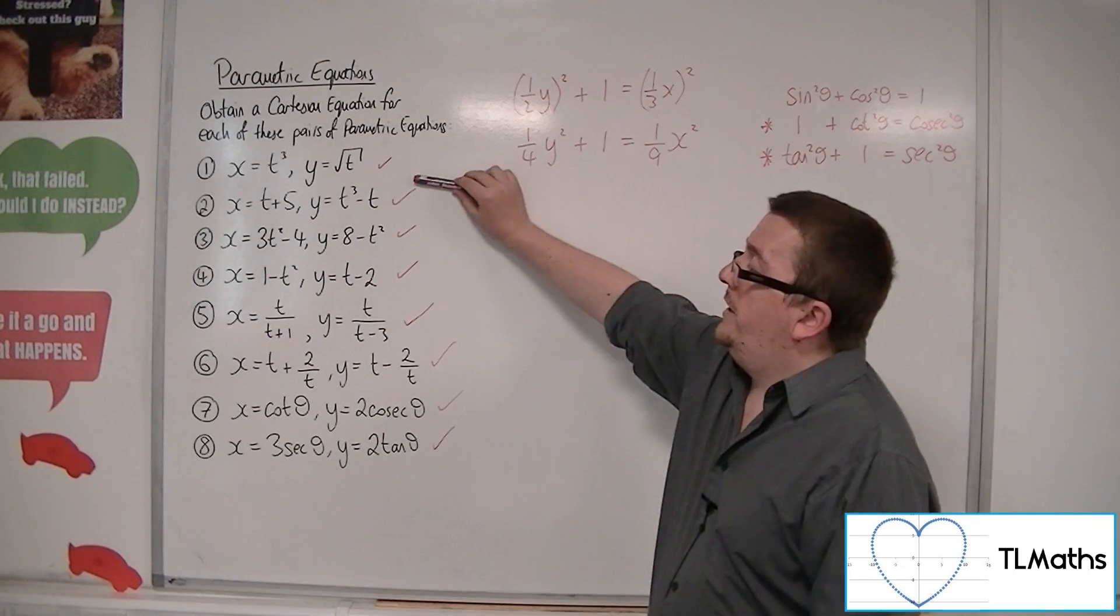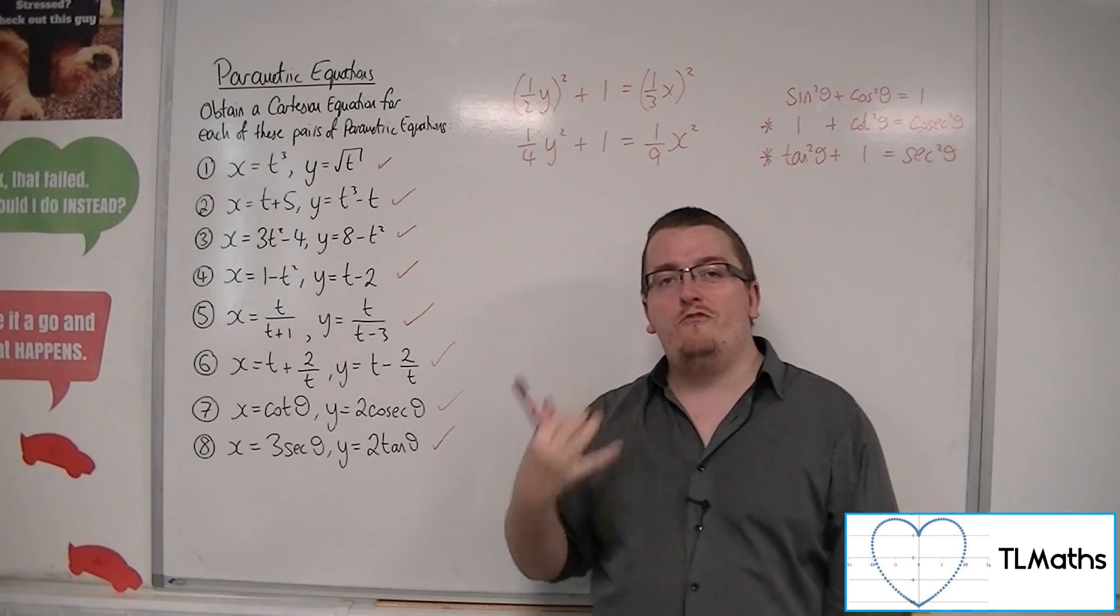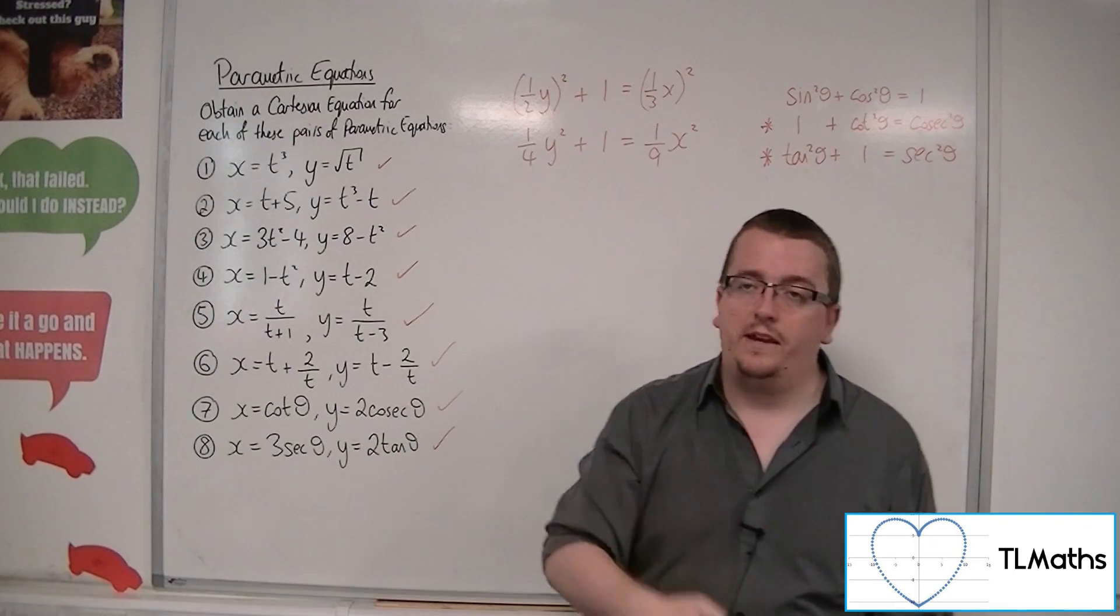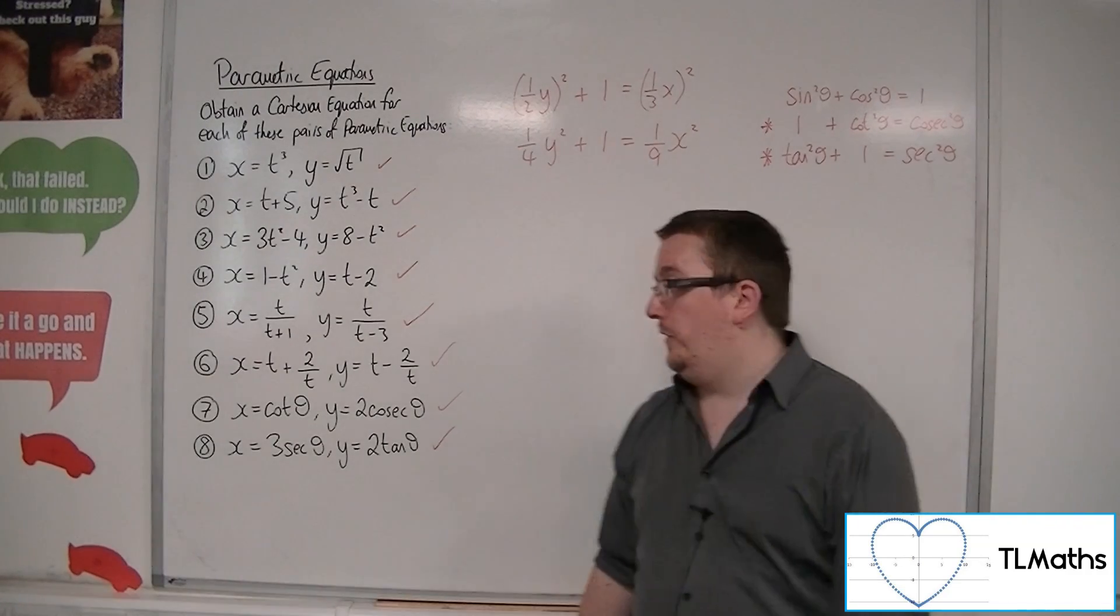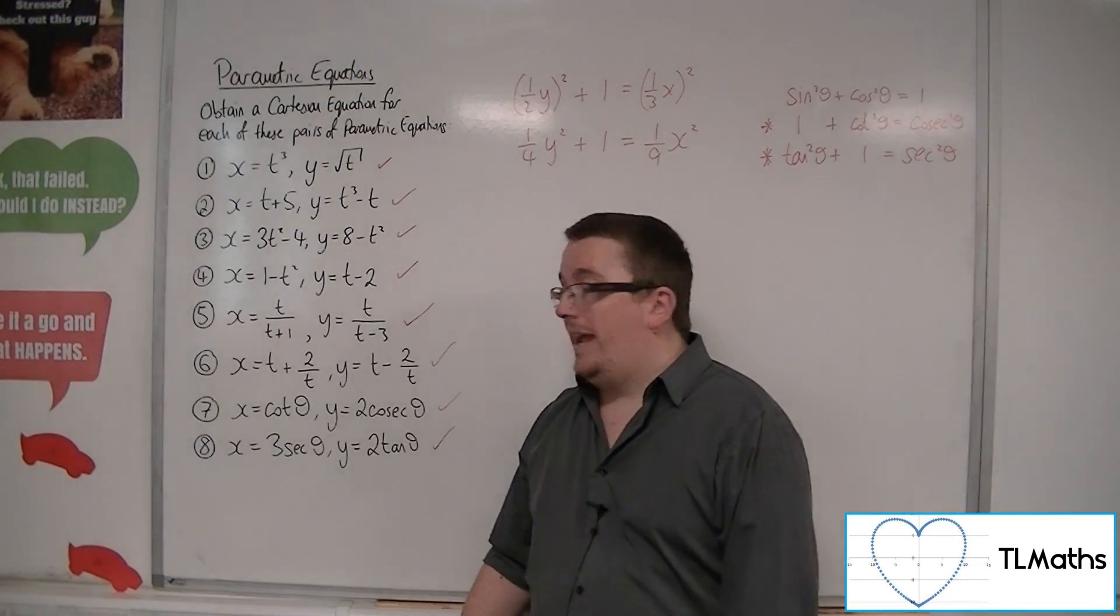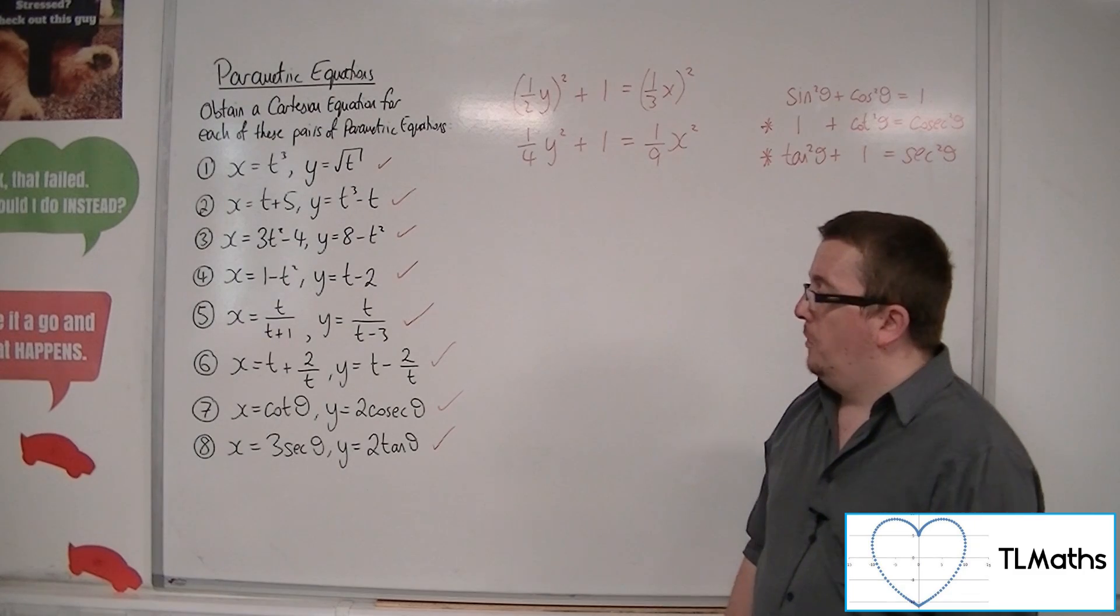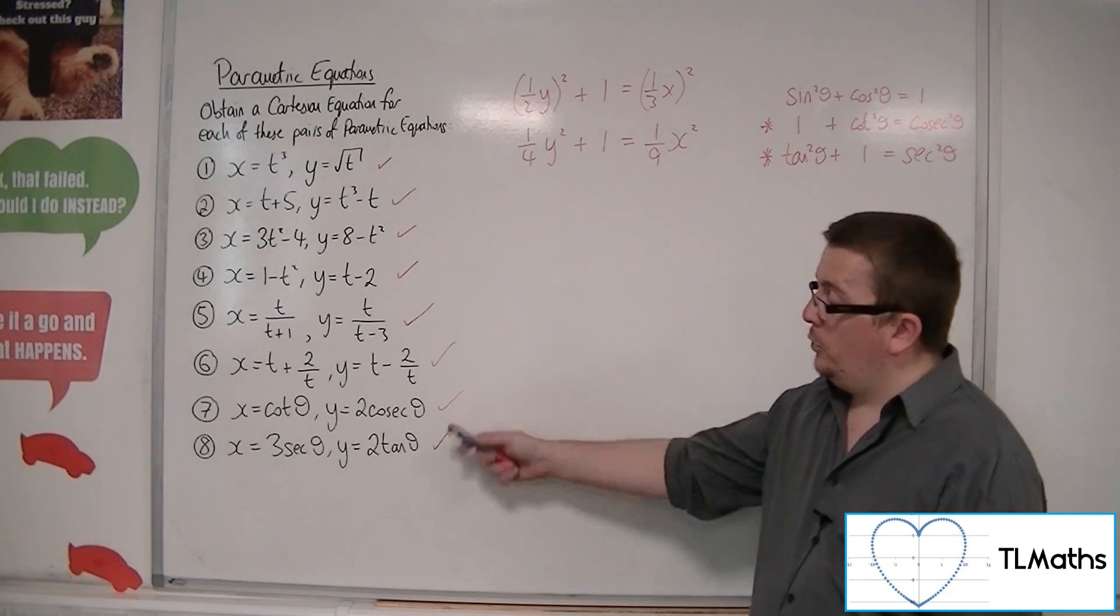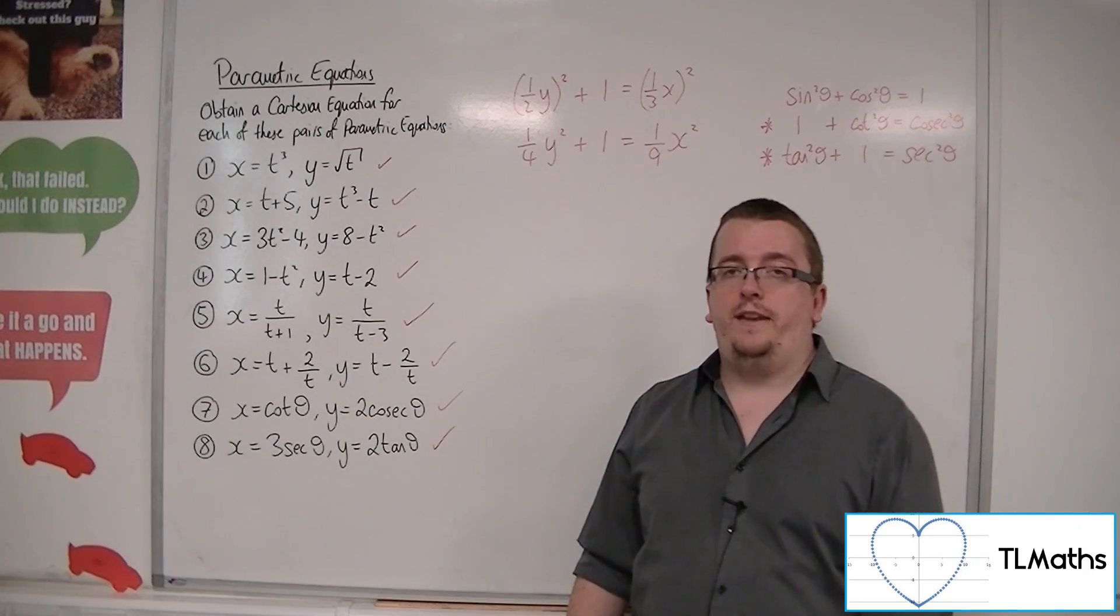So, in a lot of cases in those first five, we were looking at rearranging one of the equations, substituting it into the other. It doesn't matter whether you end up with x equals or y equals at the end. It doesn't matter at all. Number 6, we had to use a trick, adding and subtracting the two equations and multiplying them together. In questions 7 and 8, we had to revert to trigonometric identities.